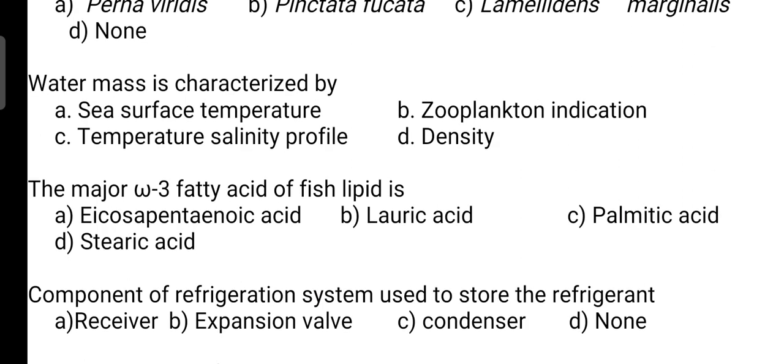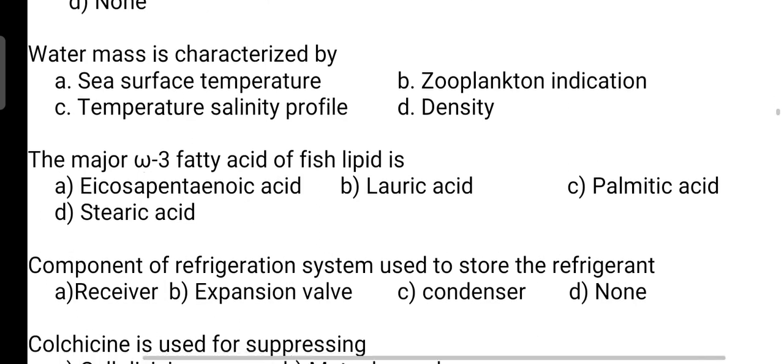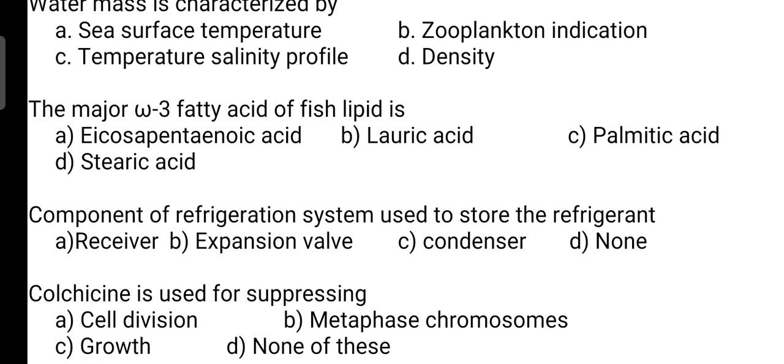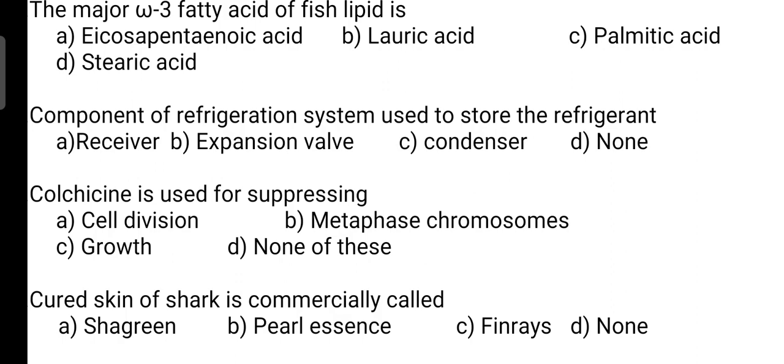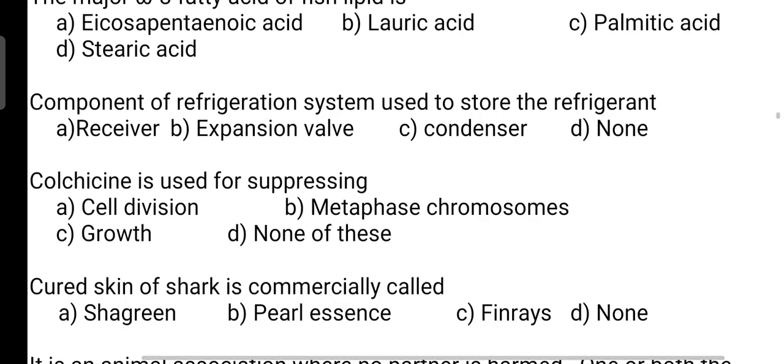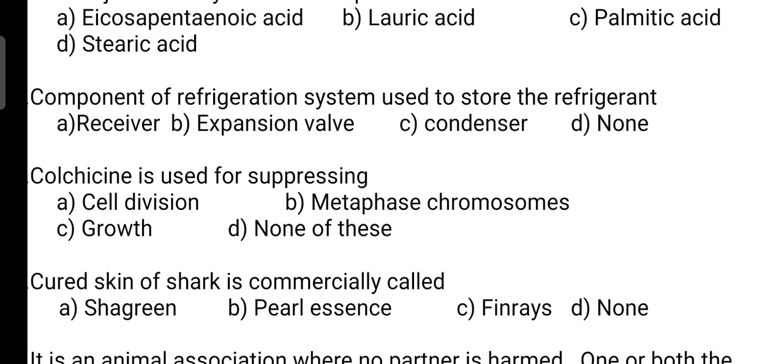Water mass is characterized by? Correct answer is Option C — it is characterized by temperature-salinity profile. Next, the major omega-3 fatty acid of fish lipid: correct answer is Option A — it is eicosapentaenoic acid. Next, component of refrigeration system used to store the refrigerant: correct answer is Option A — it is the receiver.